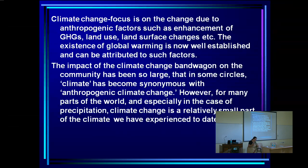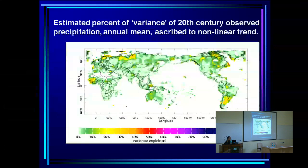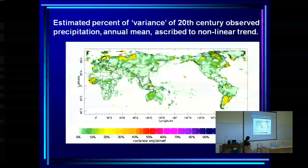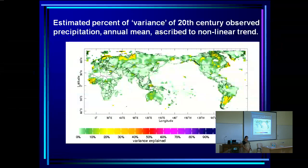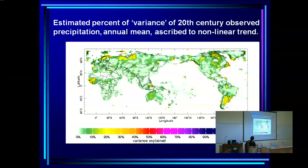The estimated percent of 20th-century observed precipitation variance ascribed to the non-uniform trend from global warming is about zero to ten percent — a rather small fraction of the observed variance. This has to be kept in mind when looking at climate change scenarios: you are looking at a very small component of the total variance. The temporal scale of climate change also has to be kept in mind.